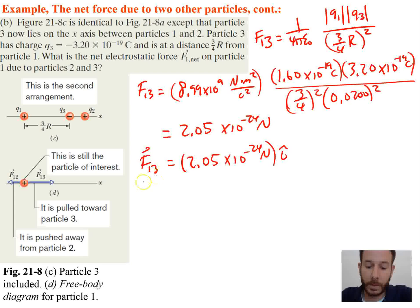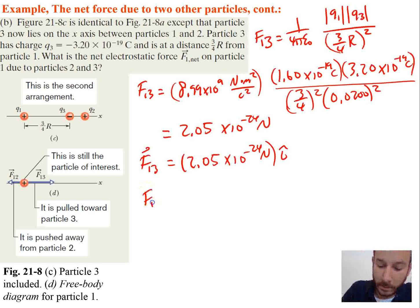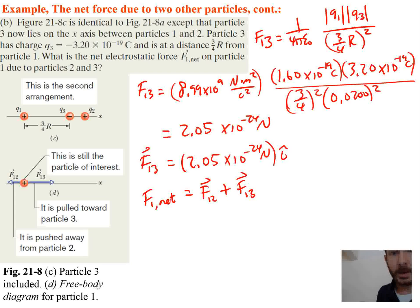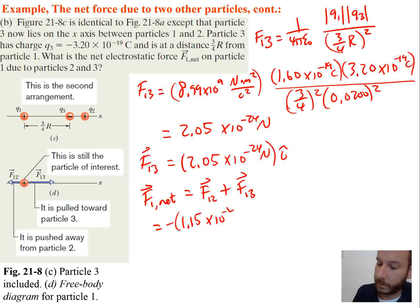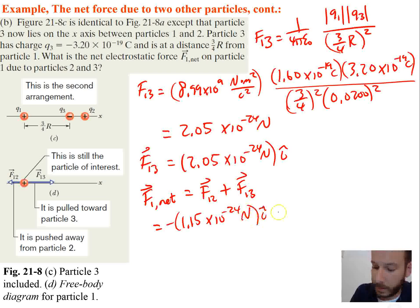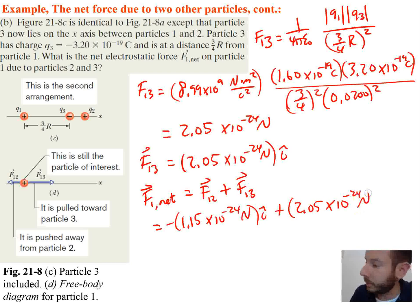We've found F13, and previously we found F12. Now we add them together to get the net force on particle 1. Keeping the signs: F1 net equals F12 plus F13, which is negative 1.15 times 10 to the negative 24 newtons î plus 2.05 times 10 to the negative 24 newtons î.